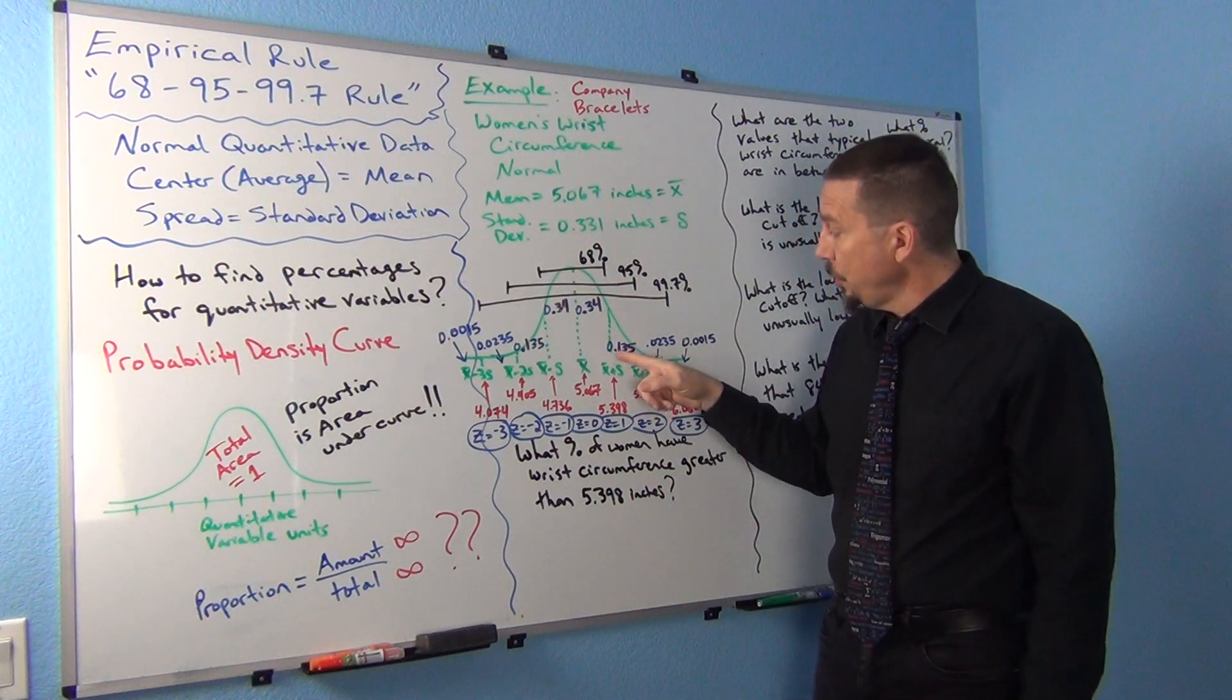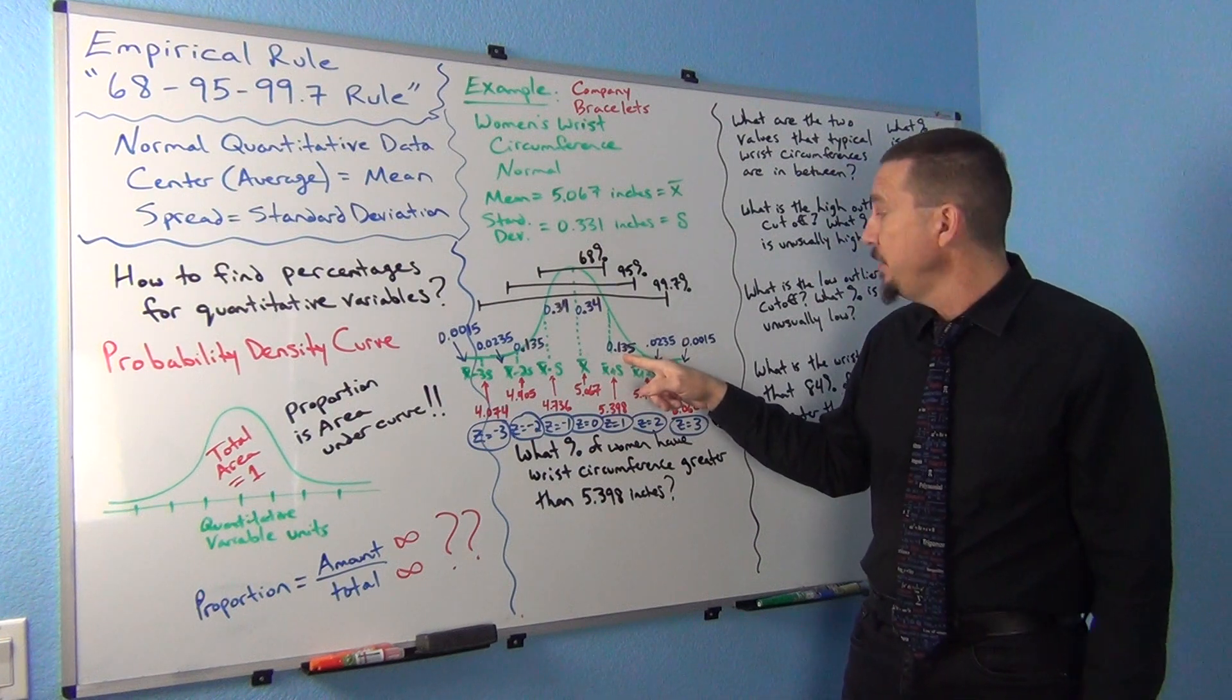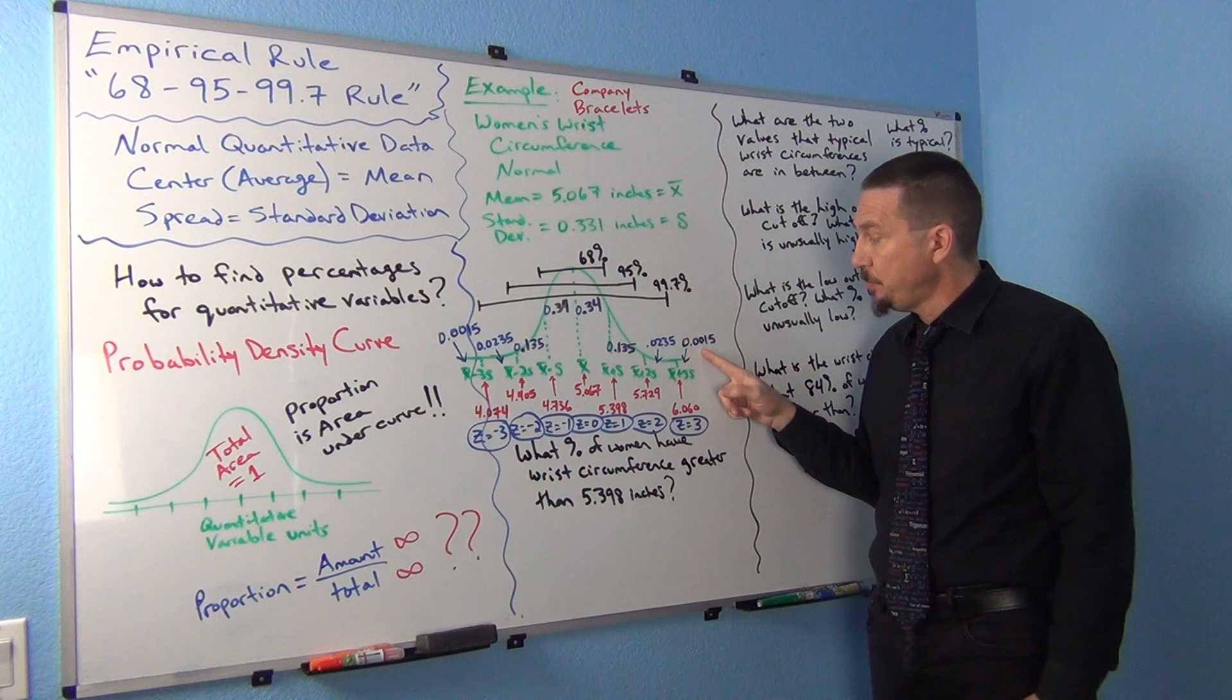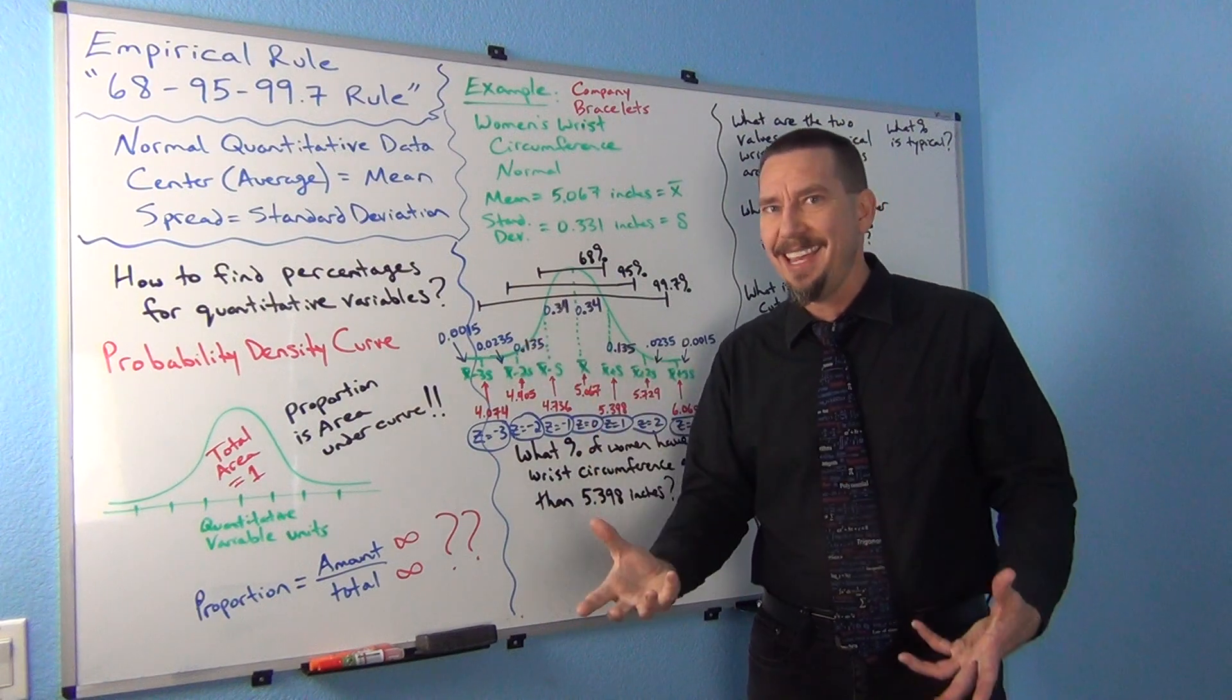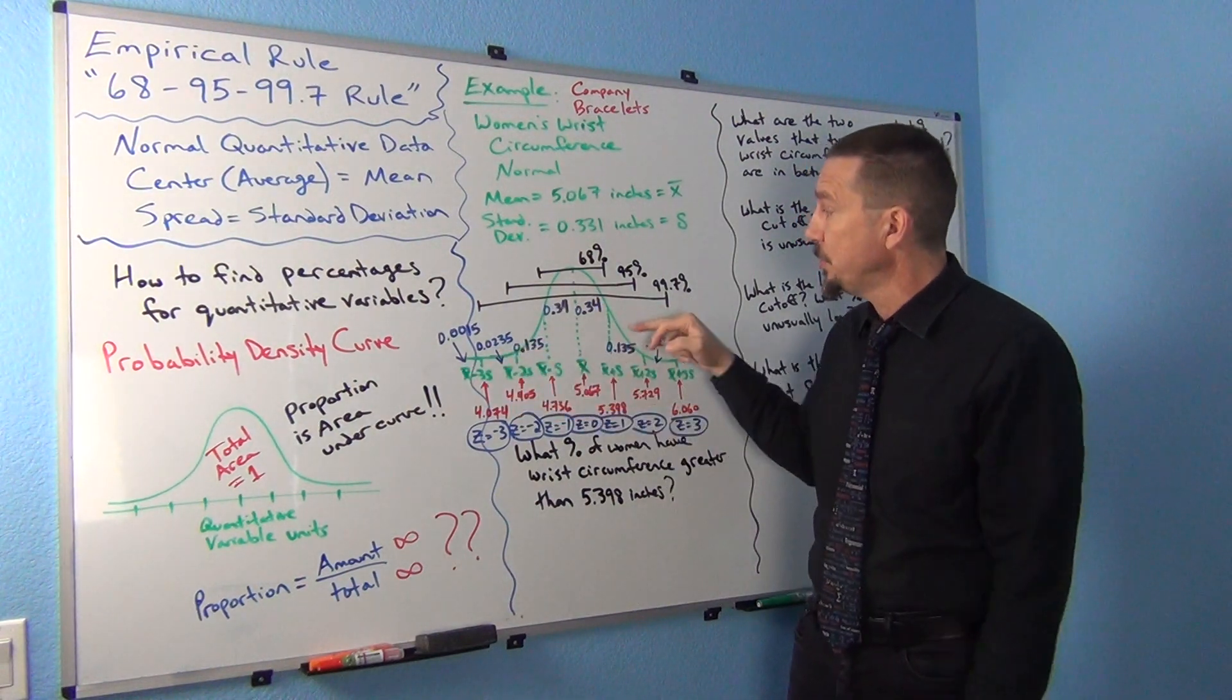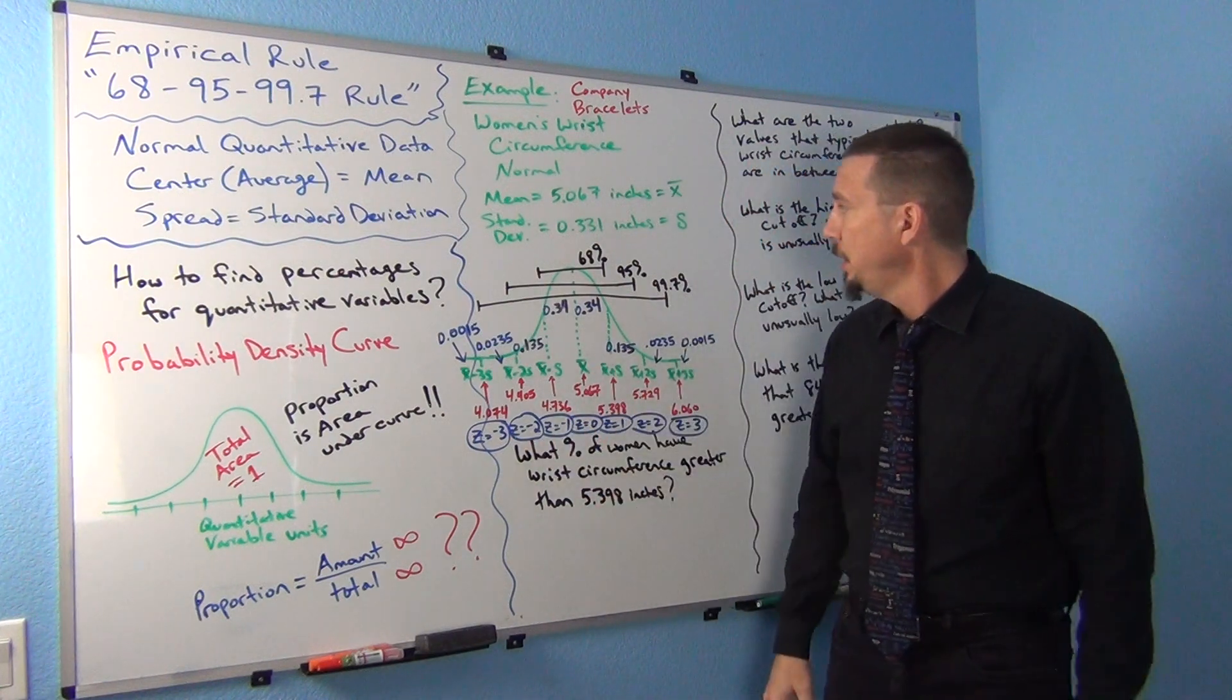Now if we go to two standard deviations, so x bar plus 2s, now we have a less area here, and it turns out that area is about 0.135. And then between two and three standard deviations is about 0.0235. And then more than three standard deviations is hardly any, we have 0.0015. So these proportions are actually always the same for normal data. That's why it's called a rule. It's the same percentages each time. Now these numbers in the bottom will change depending on the situation, but the percentages, the proportions here, will be the same. That's kind of how you want to think about it. And that's where it got its name, the empirical rule.